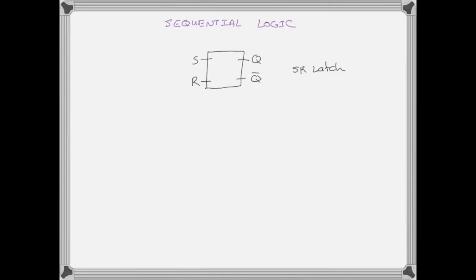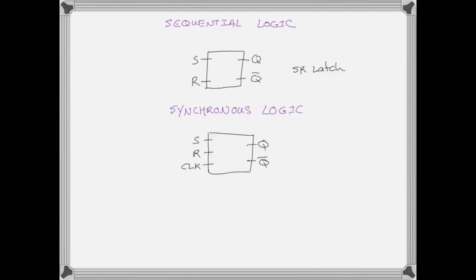To start with, remember the sequential logic we've already talked about — the SR latch. Sequential logic means it's going to remember what's on the output until you change it with the inputs. Synchronous logic is where it remembers what's on the output until not only you change the input, but you also tell it on a clock strike to change. So Q remains the same until you put a signal in on the clock, then it will change Q according to what S and R is.